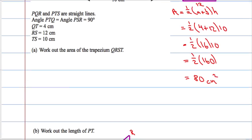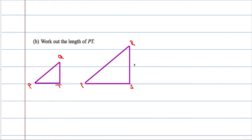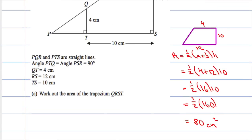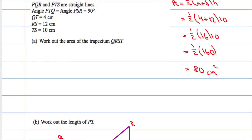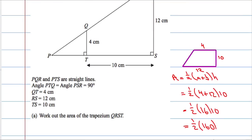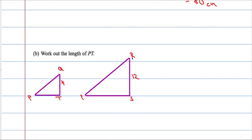SR is 12 and TQ is 4. TS is 10, but we'll worry about that in a second. I want this length here.